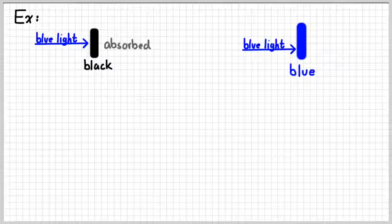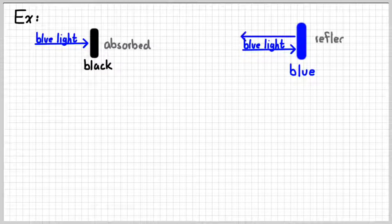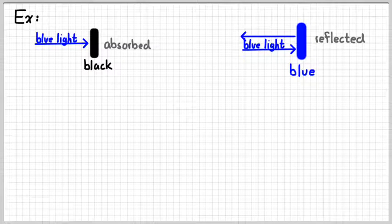If we take the same blue light and shine it on something that is blue, it's blue because it reflects blue light, and so the blue light will reflect. You may be familiar with the idea that on a sunny day, if you're wearing black clothing you will feel hotter, because black absorbs light. Whereas white or light clothing will reflect light, so you won't be as hot.